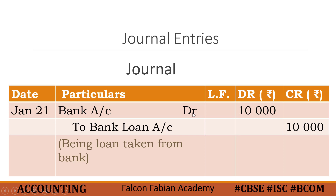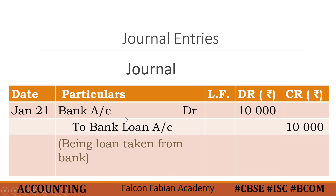That signifies it is the debit entry, and the amount is written in the debit column. In the next line, you leave some space and always start by writing 'To', then the name of the account to be credited — here it's bank loan — followed by A/C, and in the credit column write 10,000. The narrative is a brief description, always starts with 'being' and is written in brackets. Here the narrative is: being loan taken from bank.